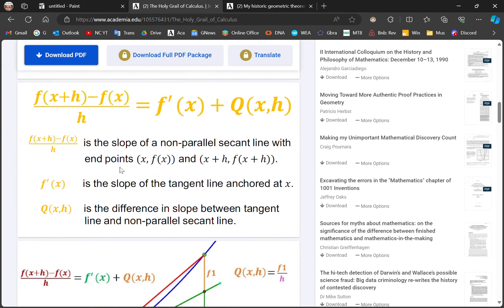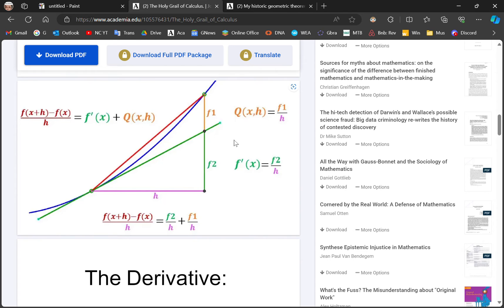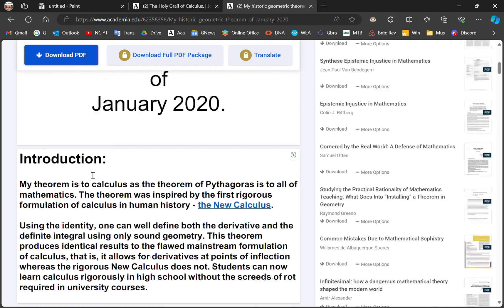But what this says is that the slope of a non-parallel secant line is equal to the slope of the tangent line plus the difference. It's shown in this diagram and proved in my historic geometric theorem of January 2020.